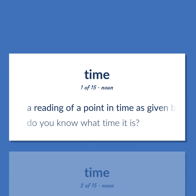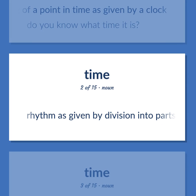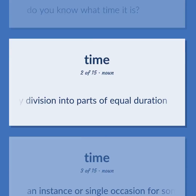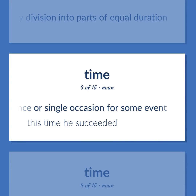TIME: A reading of a point in time is given by a clock. Do you know what time it is? Rhythm is given by division into parts of equal duration. An instance or single occasion for some event. This time he succeeded.